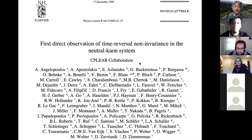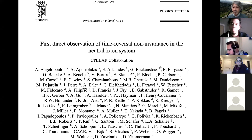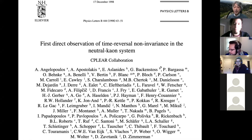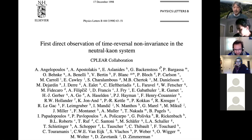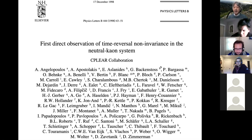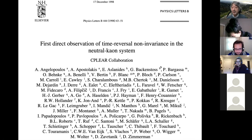For example, this is a paper that reported the first direct observation of time reversal non-invariance. We talked about the fact that charge conjugation is not a symmetry because there is a left-handed neutrino but no right-handed neutrino. Parity is also broken for the same reason, and time reversal is also broken. So C, P, and T individually are not symmetries of nature, but their product C times P times T is predicted to be a symmetry — an endurance in quantum field theory. That's a theorem we briefly mentioned last time.